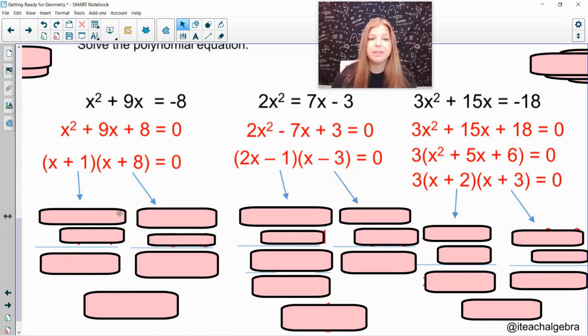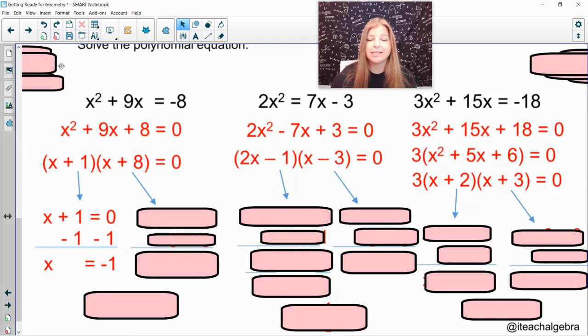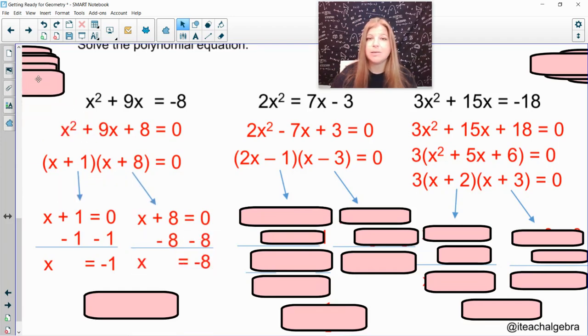So in this first one, I would set x + 1 equal to zero. To solve that equation, I would subtract 1, and I get x equals negative 1. The second part, set x + 8 equal to zero, subtract 8 on both sides, and I get negative 8 as my second solution. There's two solutions for this equation. It's negative 8, negative 1.